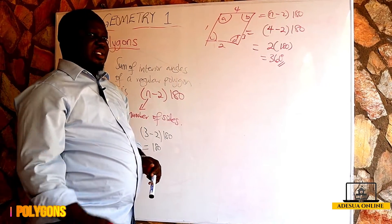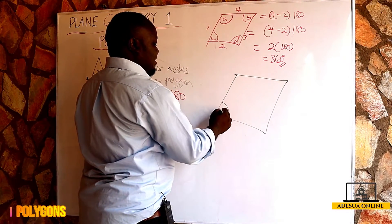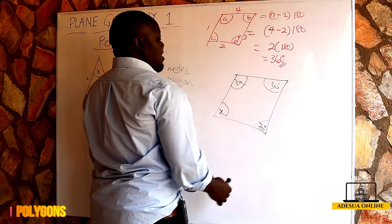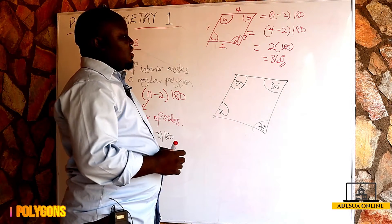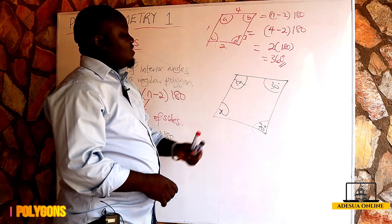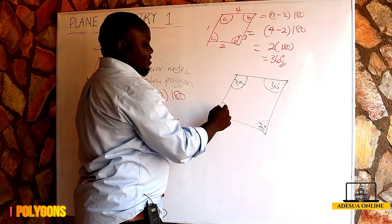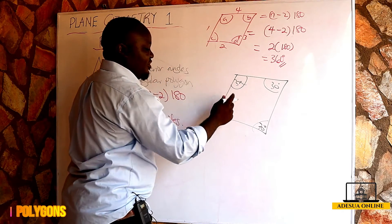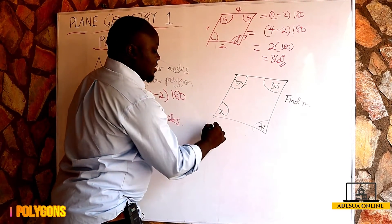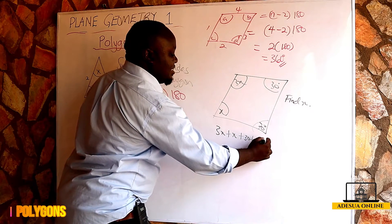Four minus two times 180 gives us two times 180, which is 360 degrees. So the sum of interior angles of a quadrilateral is 360 degrees. Assuming I'm given a question where the angles are x, 3x, 30 degrees, and 70 degrees, and they ask me to find the value of x — since this polygon has four sides, the sum of interior angles is 360.